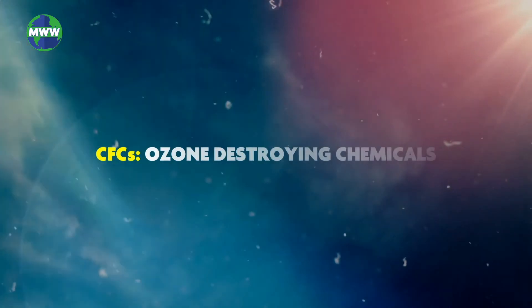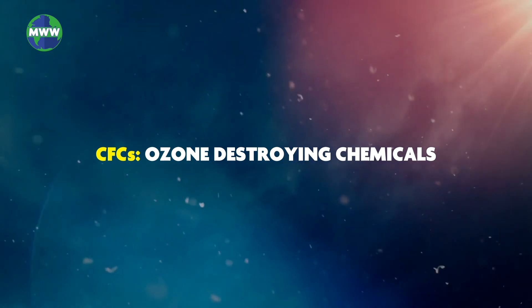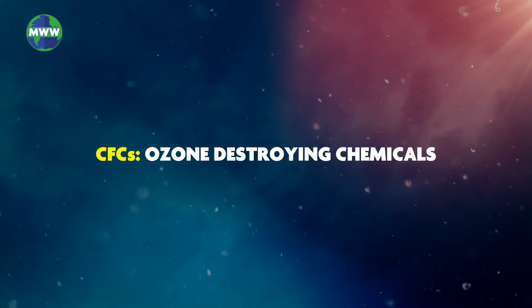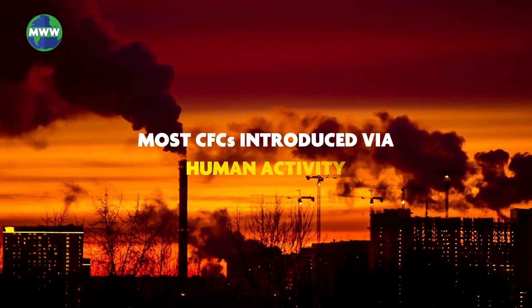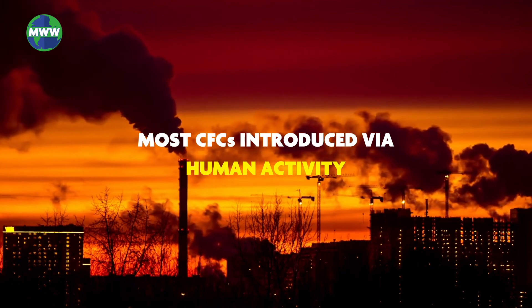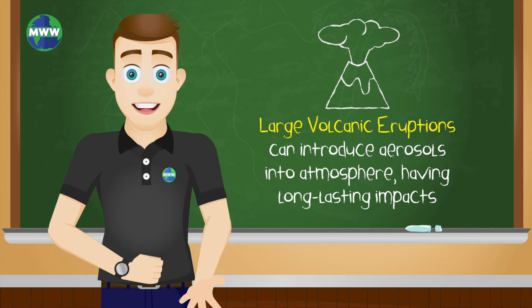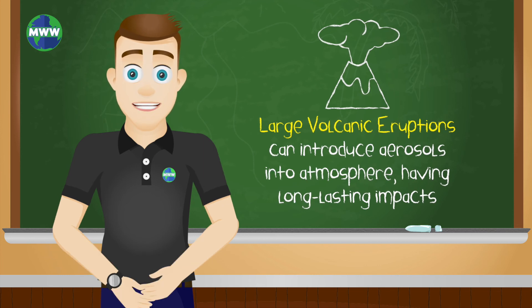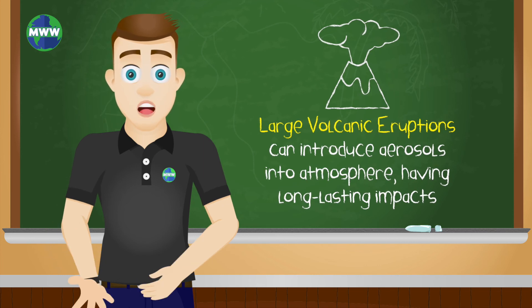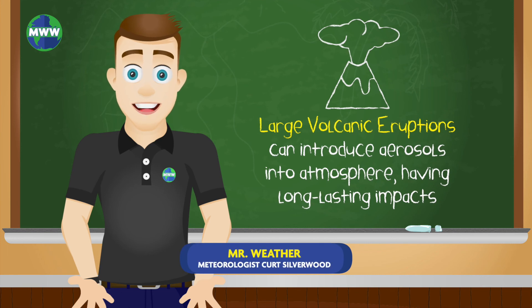Certain materials that enter the stratosphere can stay there for a long time, such as ozone-destroying chemicals called CFCs. Most CFCs are introduced into the atmosphere due to human activity. Natural disasters like large volcanic eruptions can introduce aerosols into the stratosphere where they can linger from months to years and sometimes alter Earth's global climate.